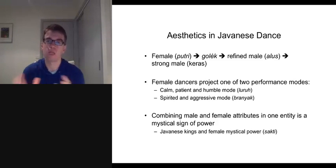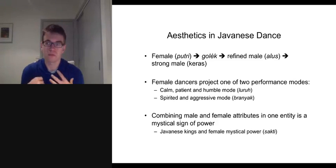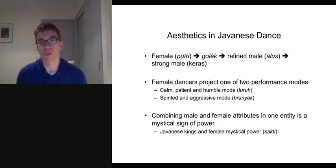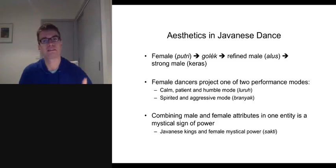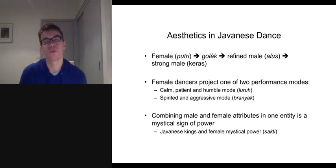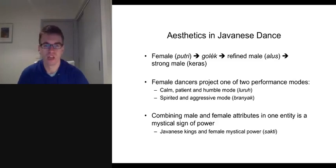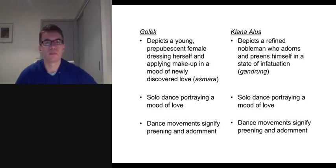The combination of male and female attributes in Java is very significant because it seems to give the dancer a form of mystical power. Just as historically Javanese kings would collect gamelan ensembles with different tuning systems — and by doing so would seem to be harnessing a kind of mystical female power called sakti — this sakti would complement the male power that the king held. By harnessing male and female power, the king would actually have much more status and potency within Javanese society.